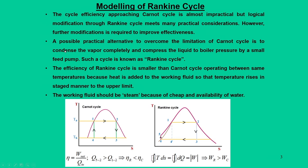Comparing Carnot cycle (1-2-3-4) and Rankine cycle (1-2-3-4-5-1): point 4-dash in the Carnot cycle lies in the liquid-vapor region, making it hard to handle. By shifting to point 4 (saturated liquid), handling becomes much easier and pumping is simpler. This is why the Carnot cycle was modified into the Rankine cycle.